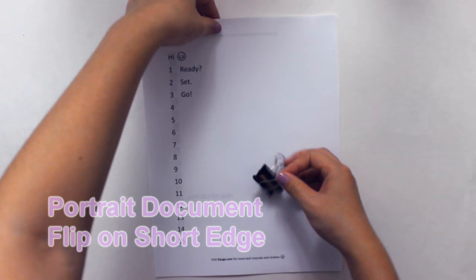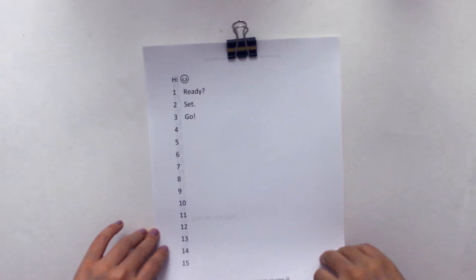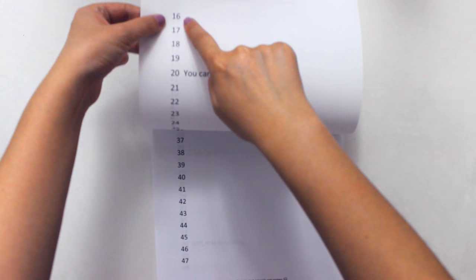Now for the flip on short edge. We will flip on the short edge, so I will place my paper clip here. This is what it looks like when we print using flip on short edge function.